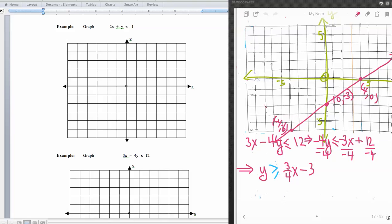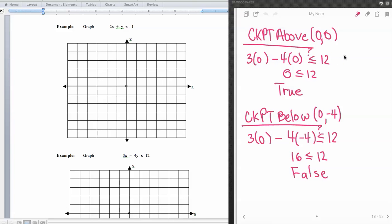And then I chose a point above the line and one below the line. And I've checked those checkpoints here. And you see that the one above the line is a true statement. The one below the line is a false statement. And because the one above the line is the true statement, I will shade that region above.